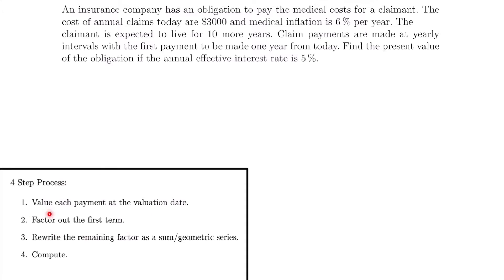We have a four-step process that we can follow to calculate either the present value or the future value of a geometric annuity. Our first step is to value each payment at the valuation date. We need to figure out whether we're looking for a present value or a future value, because that's going to change how we value these payments. This problem makes that easy because the last sentence tells us to find the present value of the obligation.